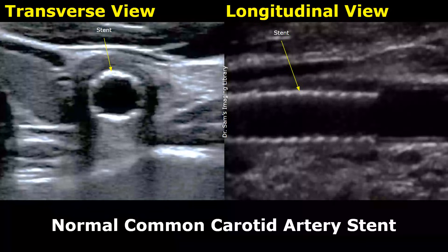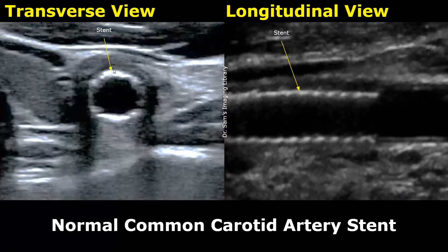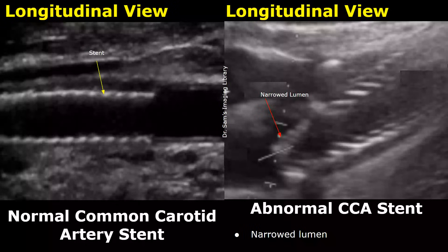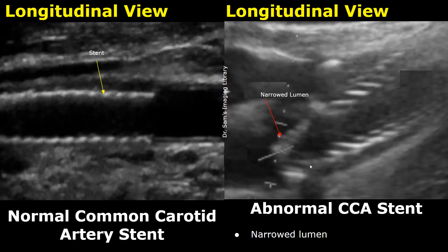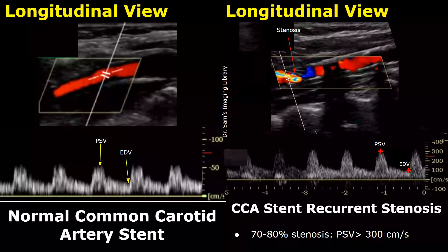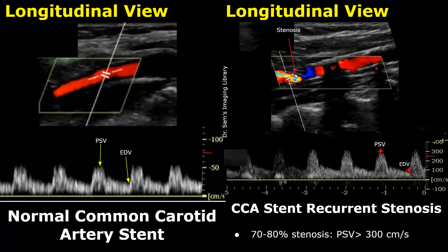Here are images of common carotid artery stents in transverse view and longitudinal view. The stent appears as a mesh-like structure lining the lumen of the carotid artery. In this image, we can see an abnormal stent with narrowing of the lumen — some stents can cause stenosis of the artery after a period of time. On spectral Doppler, if the PSV at the site of stenosis is more than 300 cm per second, it is considered a 70 to 80% stenosis. In this case, the PSV has crossed 300 cm per second, indicating a stenosis of 70 to 80%.